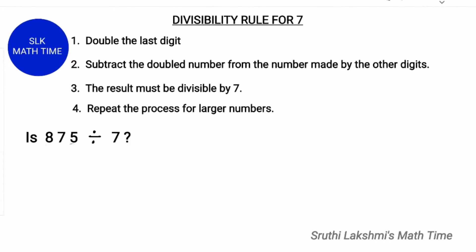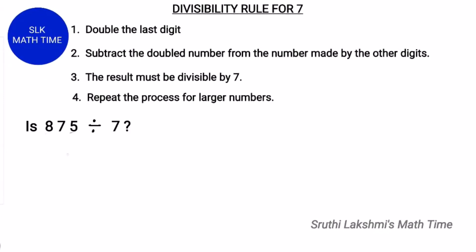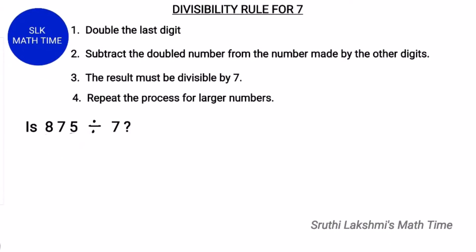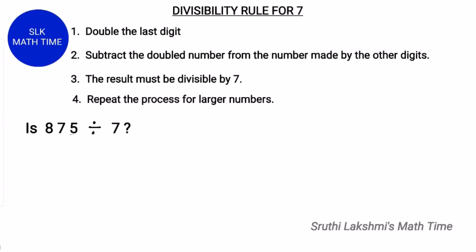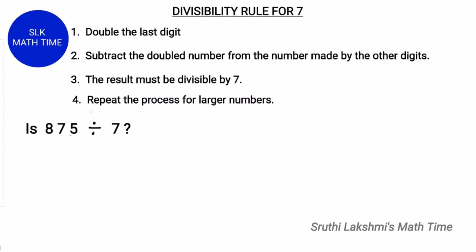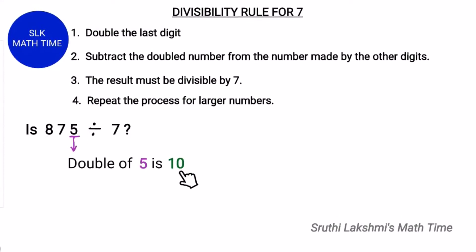So let's see an example. Is 875 divisible by seven? Here the last digit is 5. So we have to double 5. The double of 5 is 10.